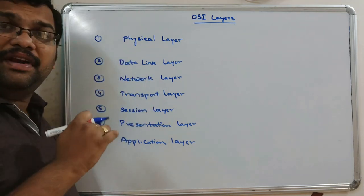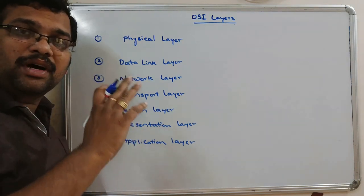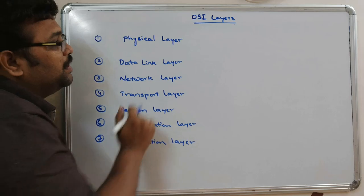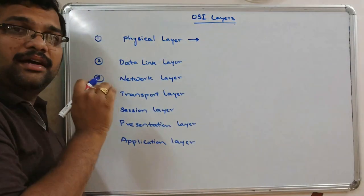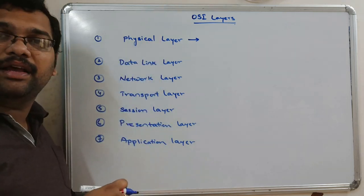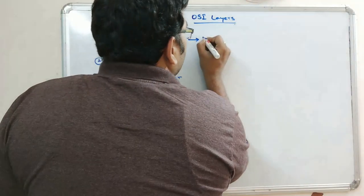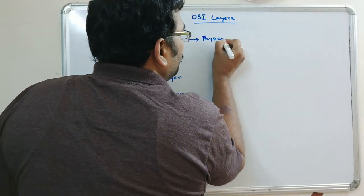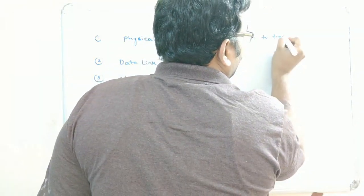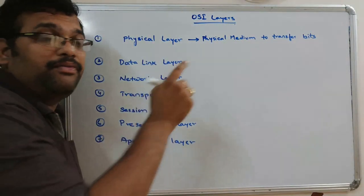Each and every layer has its own functionality. For transmitting data from one system to another, the data must pass through all seven layers. I will give you a brief idea about all these layers, and from the next session we will cover one layer per session. Coming to the physical layer, it provides a physical medium to transfer bits — the data here is in the form of bits.